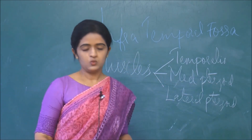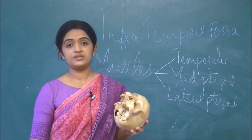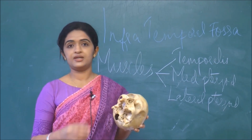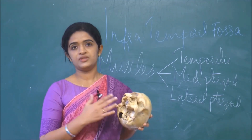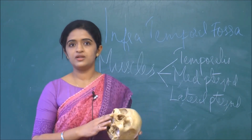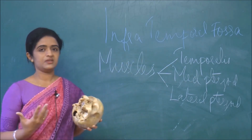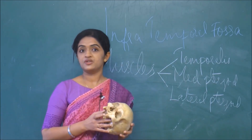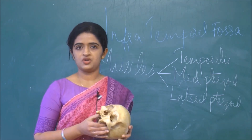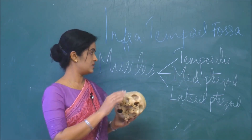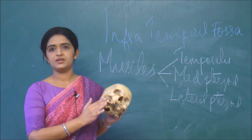Let us see one by one, roughly, how each muscle comes into the infratemporal fossa — how does the temporalis muscle come here, how does the medial pterygoid come here, and how does the lateral pterygoid come here? The details of the muscles we will discuss under the heading of muscles of mastication or movements of the temporomandibular joint, but for now we will just comment on where the temporalis muscle is and how it comes here.